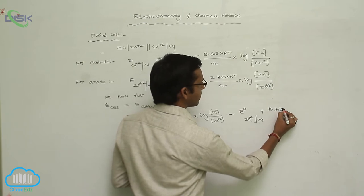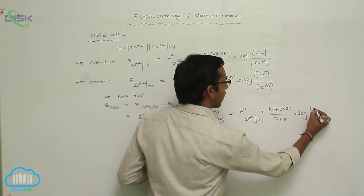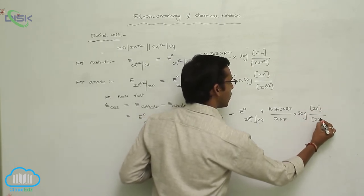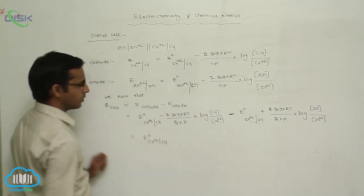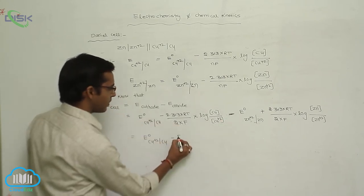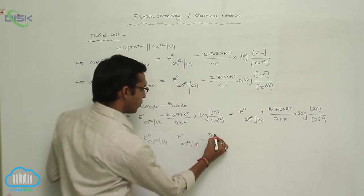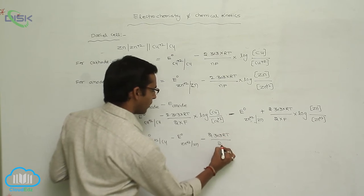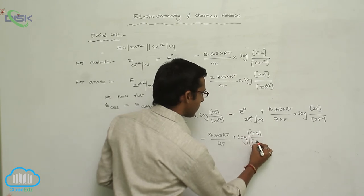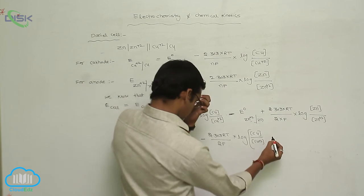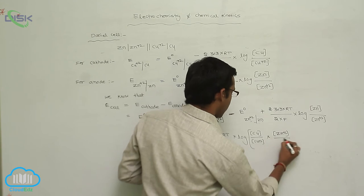So that gives 2.303 into RT by N value — again N equals 2 — so 2 into F into log, concentration of zinc metal by concentration of zinc ion solution. The E⁰ standard terms combine: E⁰(Cu²⁺/Cu) minus E⁰(Zn²⁺/Zn), minus 2.303 RT by 2F into log, concentration of Cu by concentration of Cu²⁺, minus concentration of Zn²⁺ by concentration of Zn.